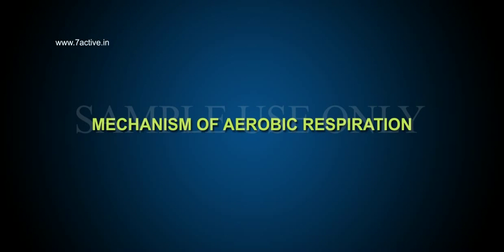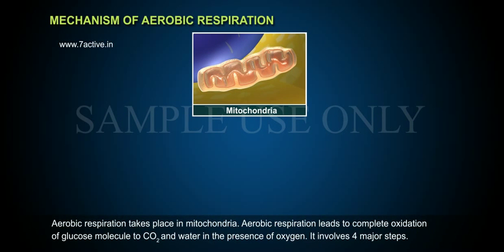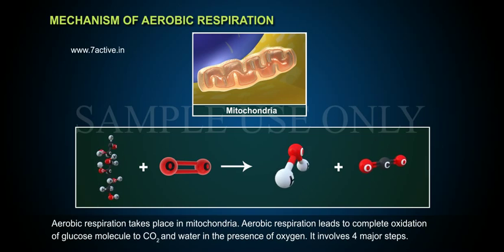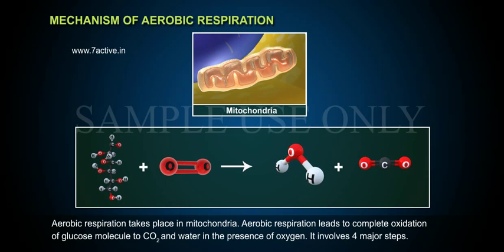Aerobic respiration takes place in the mitochondria. It leads to complete oxidation of a glucose molecule to CO2 and water in the presence of oxygen. It involves four major steps.